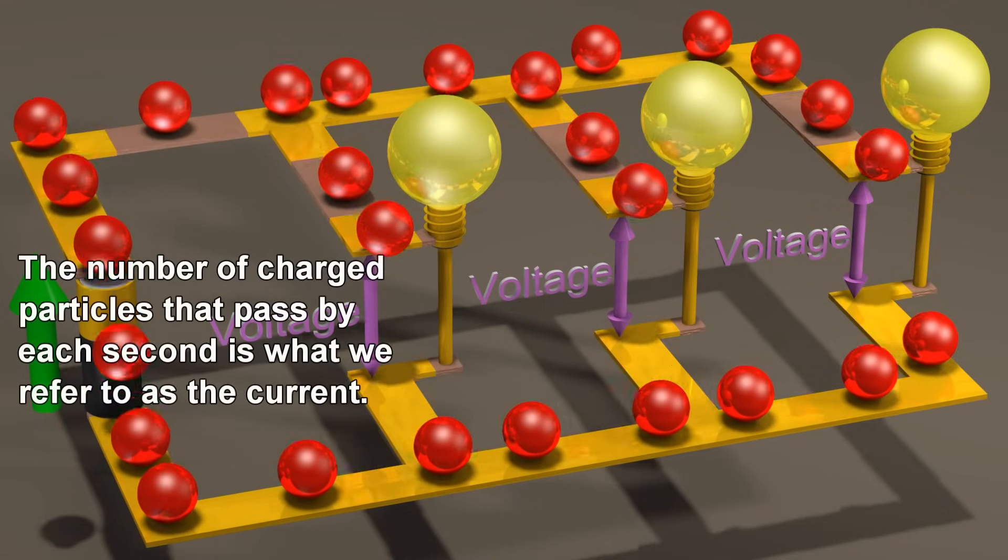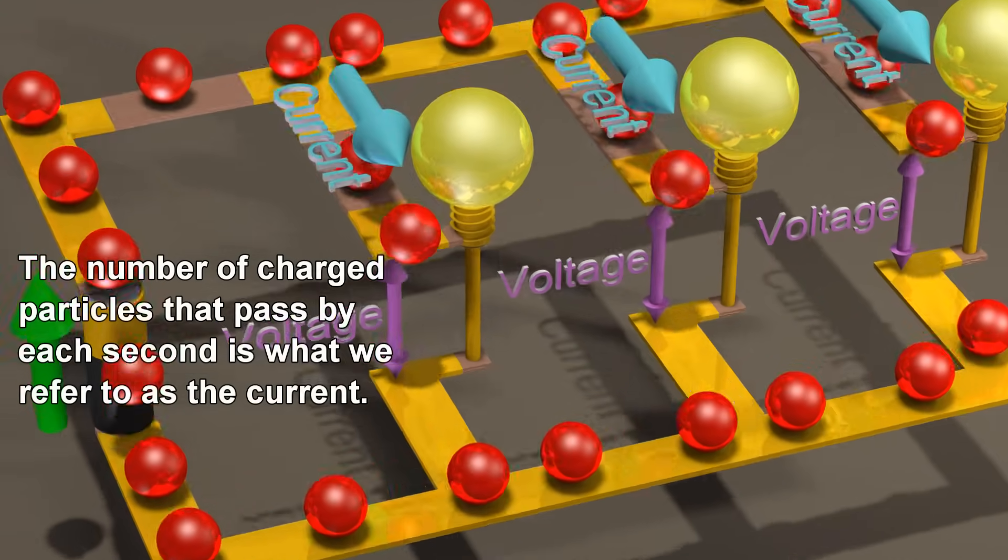The number of charged particles that pass by each second is what we refer to as the current.